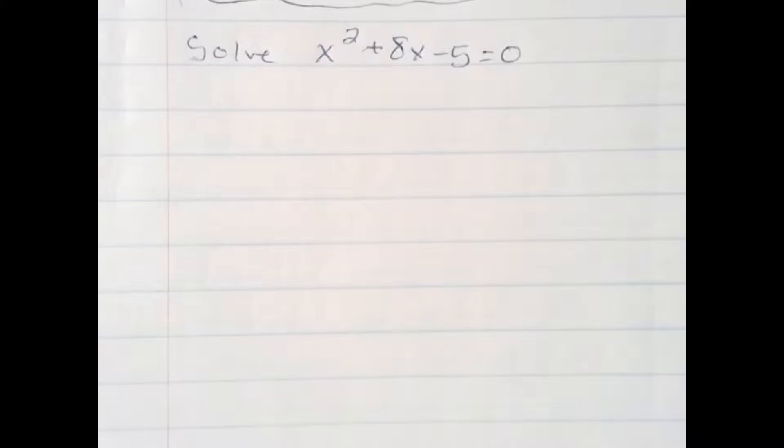Here we're going to solve a quadratic x squared plus 8x minus 5 equals 0, and we're going to use the method of completing the square, which is predicated on a perfect square trinomial.